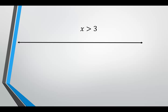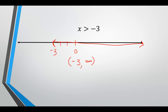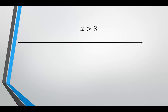x greater than 3. Locate 3 on your number line. If x is greater than 3, it will be all to the right. We do not include 3 because it's strictly greater than, so we put a parentheses at 3. For the interval notation: parentheses 3, comma, positive infinity, close parentheses.